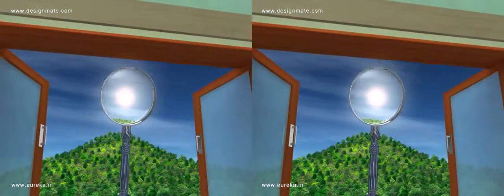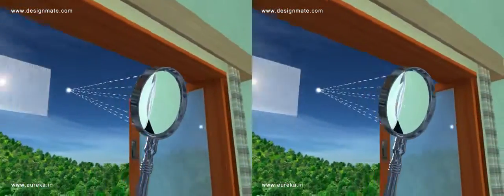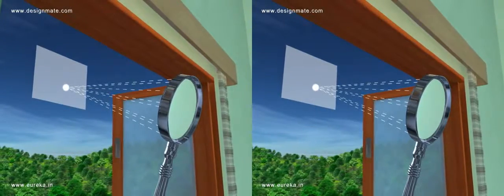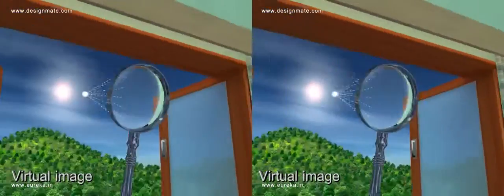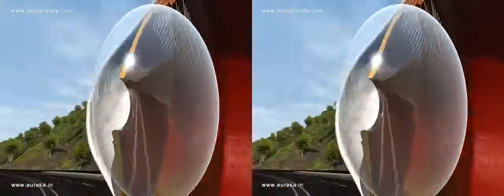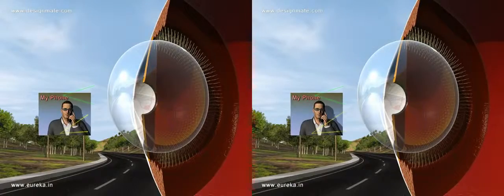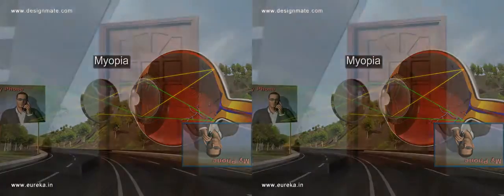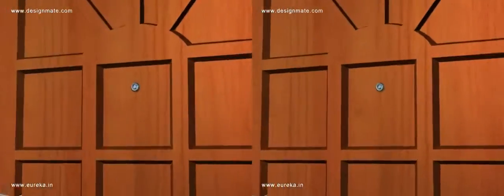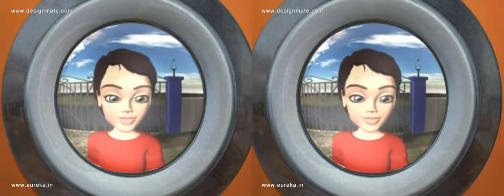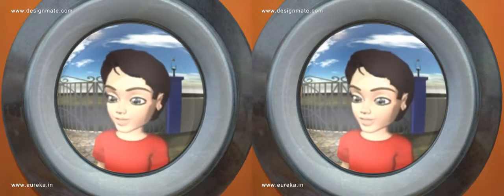The sun viewed through a concave lens would appear as a point, but if you place paper at this point it would not be heated, because the image formed is a virtual image. Concave lenses are used to correct short-sightedness in people suffering from myopia. A concave lens is also used in peepholes of doors to produce a minimized image of the person on the other side.